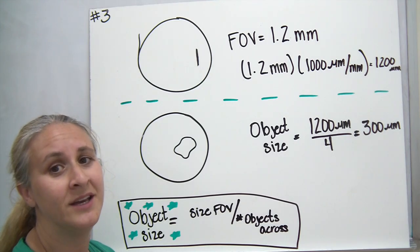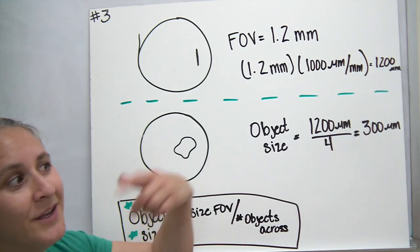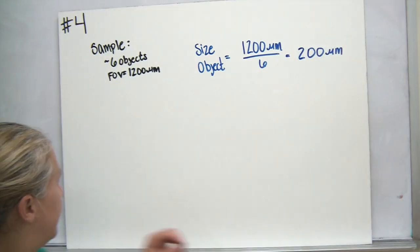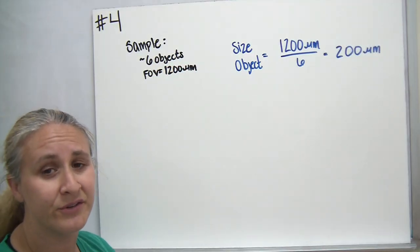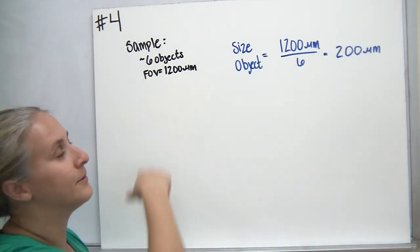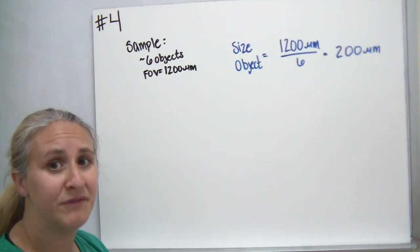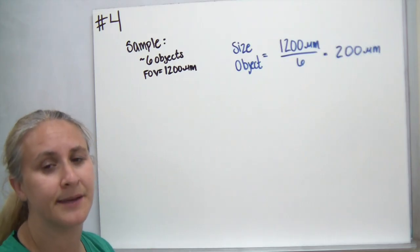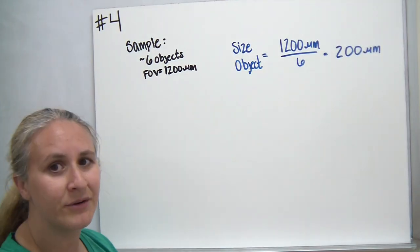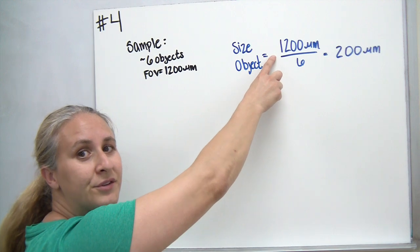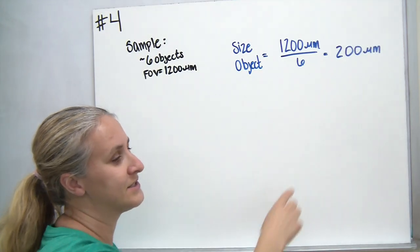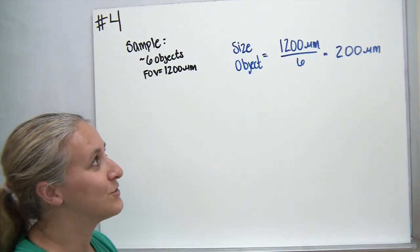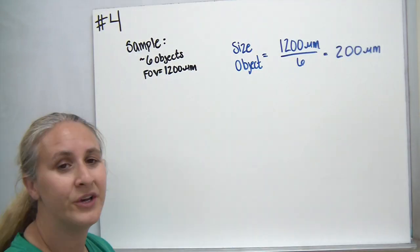Pause the video and try the example in your packet. In that example, we had six objects that would fit across our field of view. We're going to use the same field of view of 1,200 micrometers. To find the size of one object, we take our field of view diameter in micrometers and divide by the number of objects across the diameter: 1,200 micrometers divided by six gives us an answer of 200 micrometers.